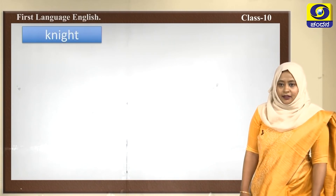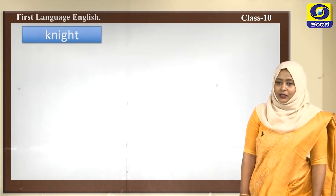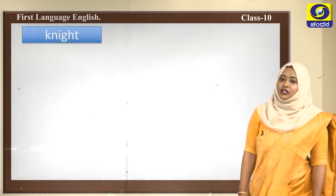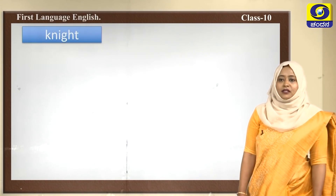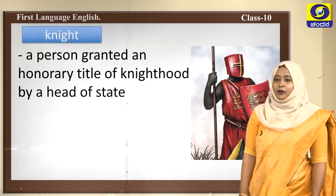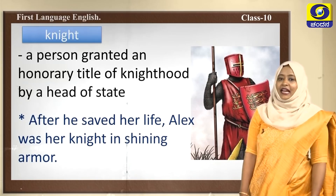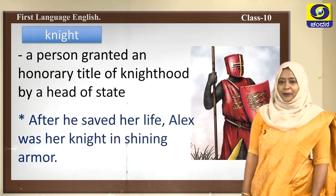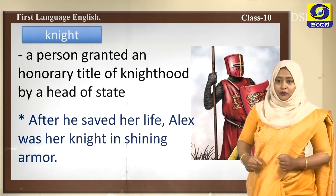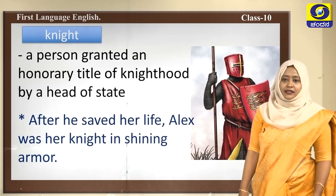Before going ahead, let's learn the glossary — we need to understand the words to understand the poem better. This poem is written in an old form of English, which is a little complicated, so we will understand the words first. Knight: a person granted an honorary title of knighthood by a head of state. Example sentence: After he saved her life, Alex was her knight in shining armor.